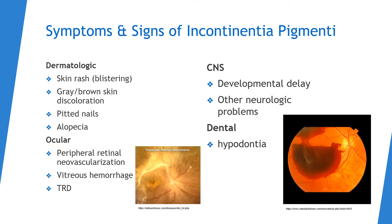The symptoms and signs of this disease include skin rash, skin discoloration, pitted nails, and balding. In the eyes: peripheral retinal neovascularization, hemorrhage in the vitreous, and tractional retinal detachment. In the central nervous system, there may be developmental delays and other neurologic problems. In the teeth, hypodontia is the main issue.